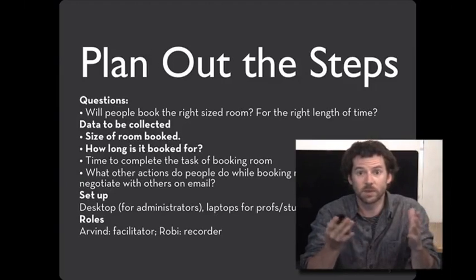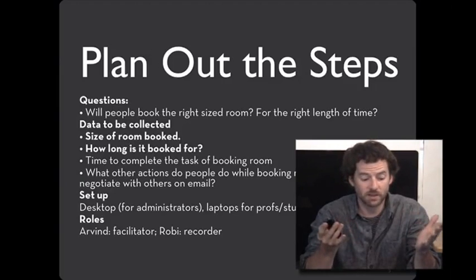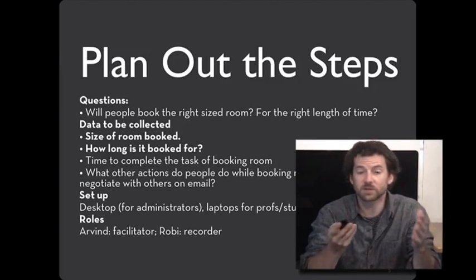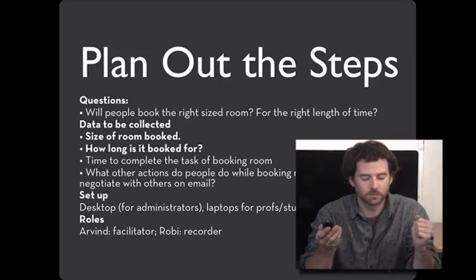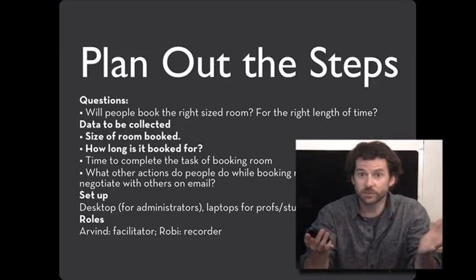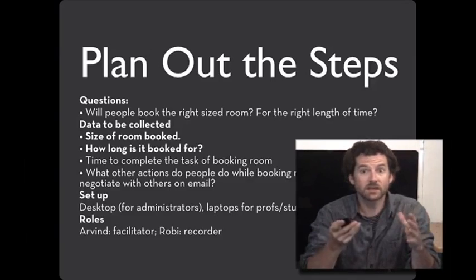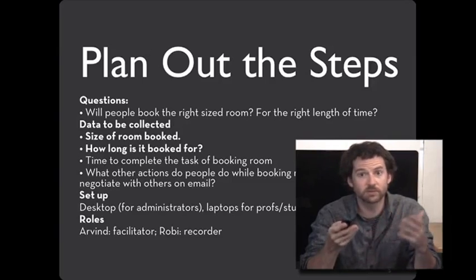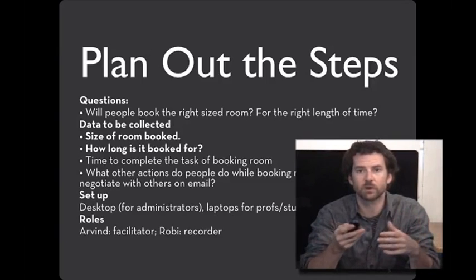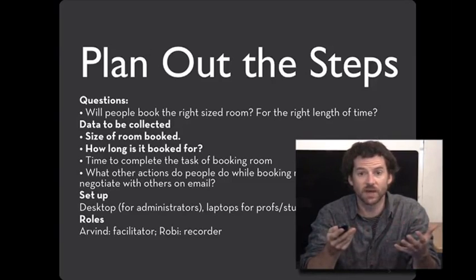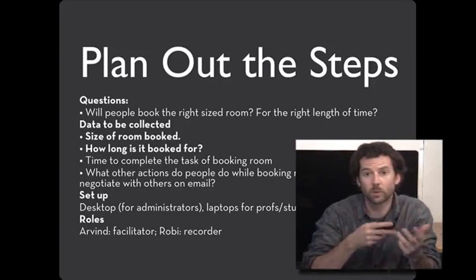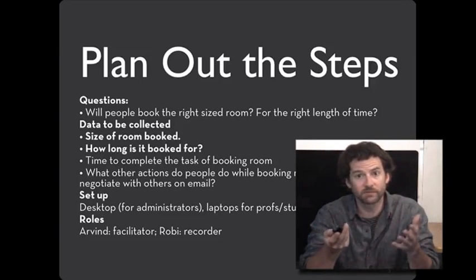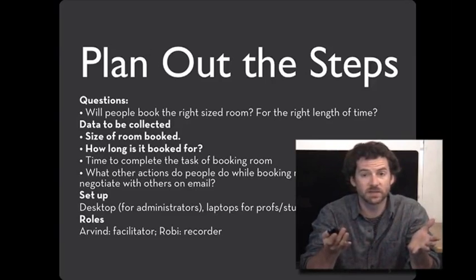Questions like whether people will book the right size room and for the right length of time imply concrete measures: the size of room booked, how long it was booked for. You can also get measures like task completion time. And especially if you have realistic users, you can see how the task interleaves with other things they do — for example, whether people make notes to order food or need to coordinate over email to get an approximate attendance count.